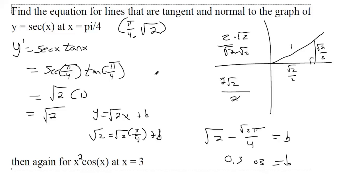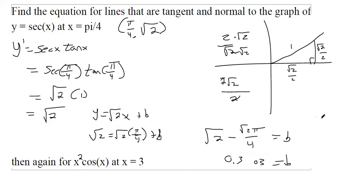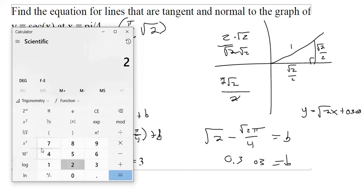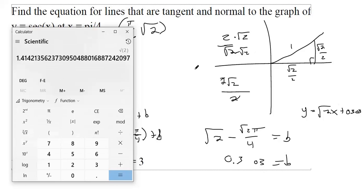So the full equation — with the slope and the y-intercept — is y = √2·x + 0.303. Or in decimal form: y = 1.414x + 0.303. That's the equation of the tangent line.